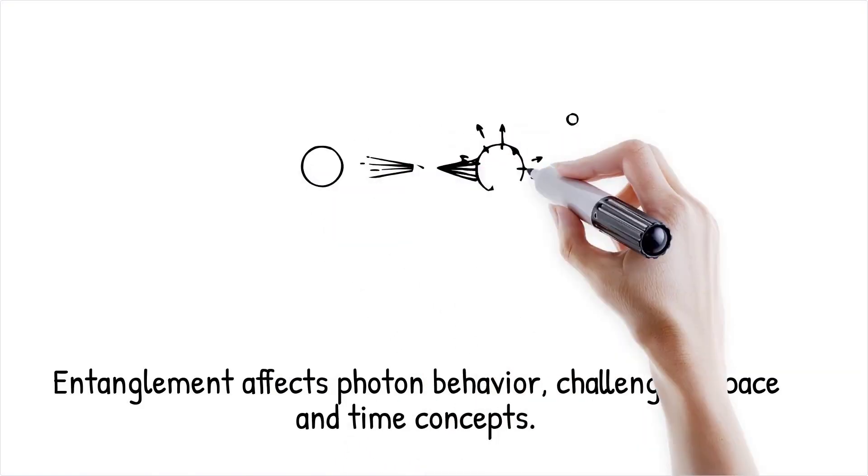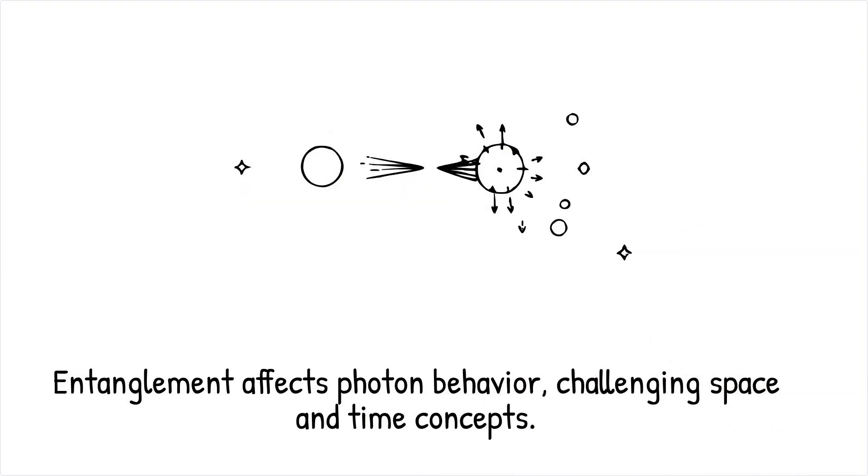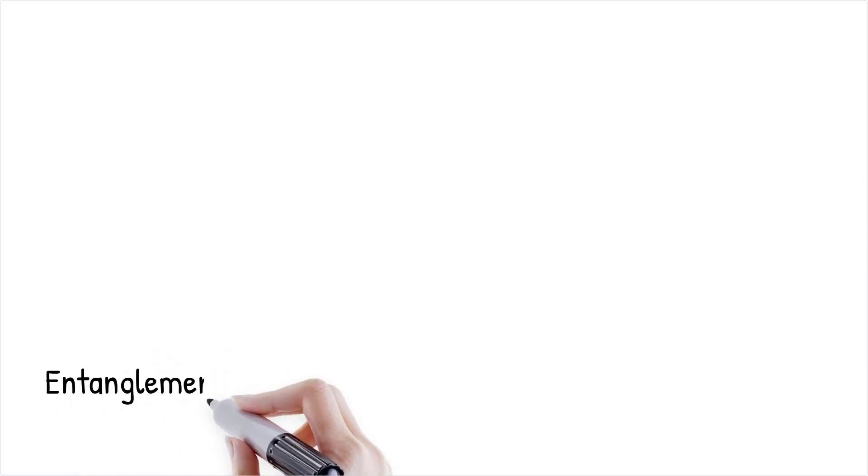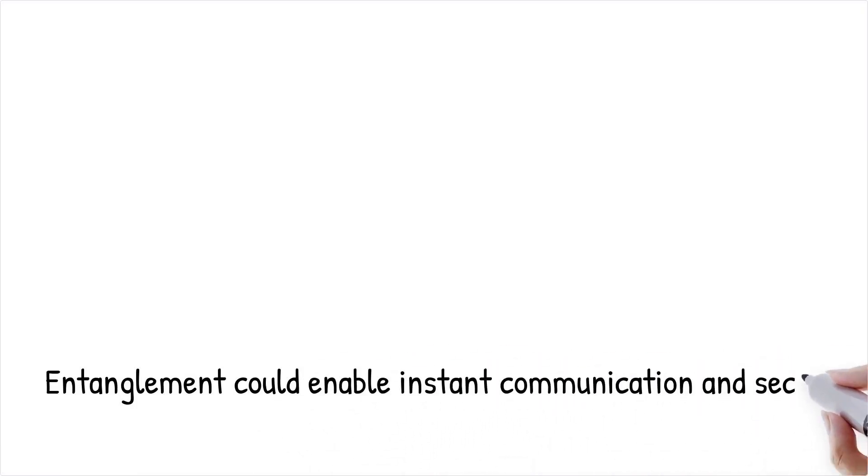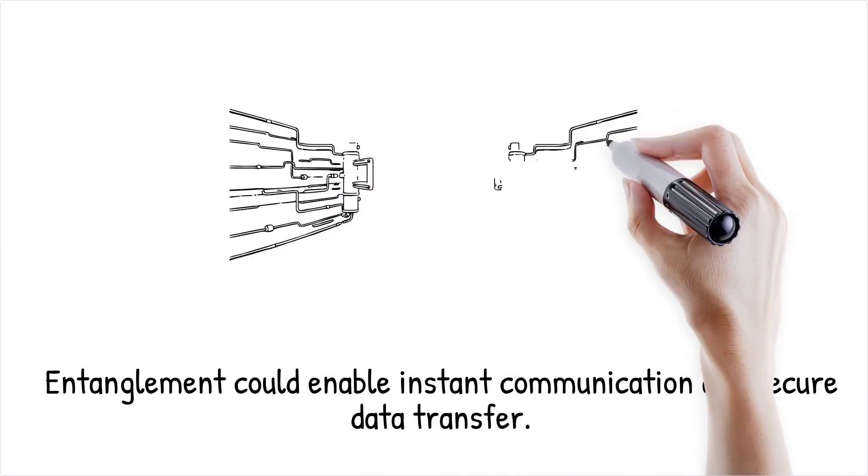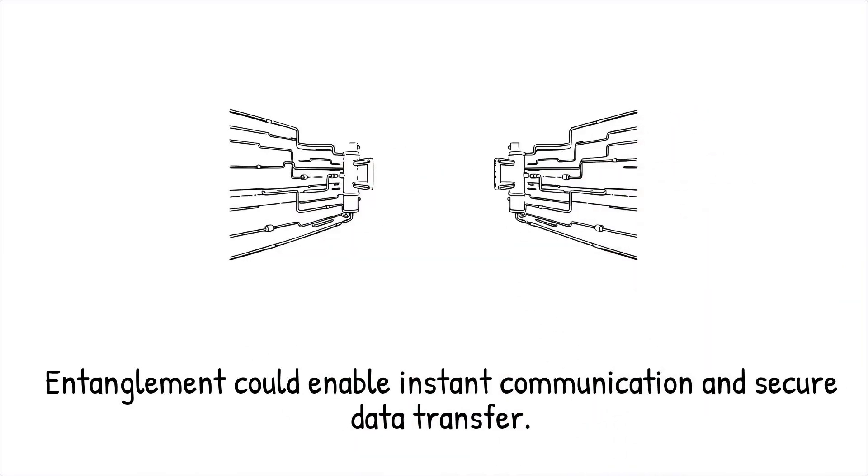In the delayed choice experiment, entanglement allows one photon's measurement to affect its partner, even though it should have already made a decision about its behavior. This suggests that quantum entanglement could bypass our conventional understanding of space and time, acting instantaneously across vast distances.